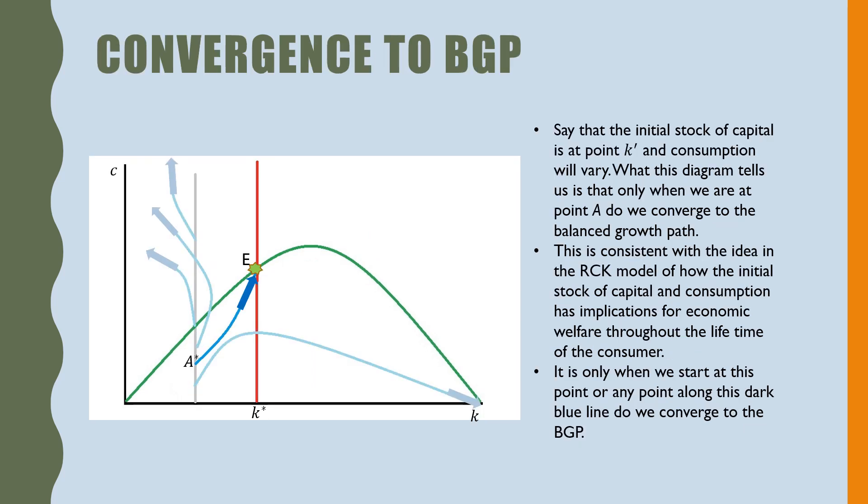So let's talk about convergence to BGP. Say that the initial stock of capital is at point k prime and consumption will vary. What this diagram tells us is that only when we are at point A do we converge to a balanced growth path.